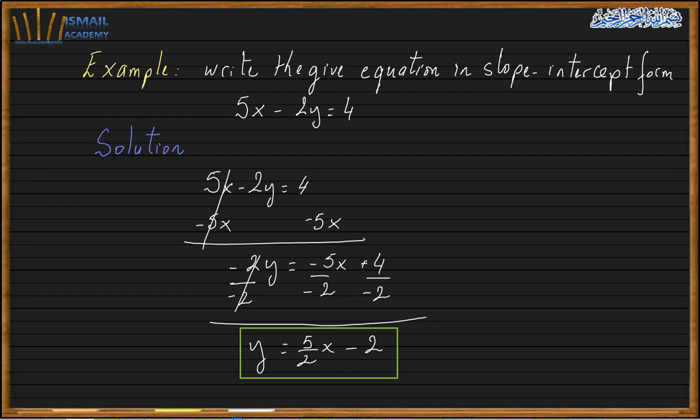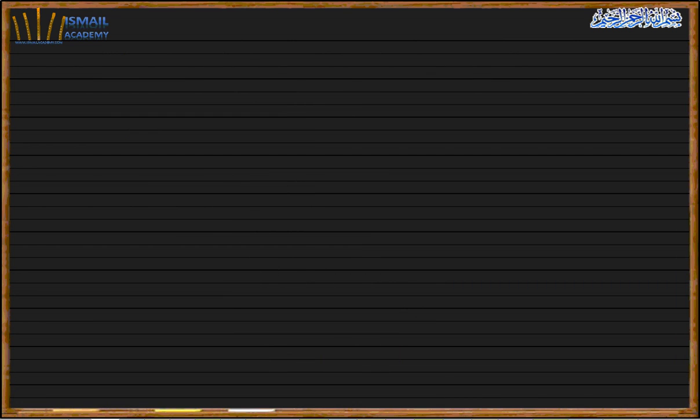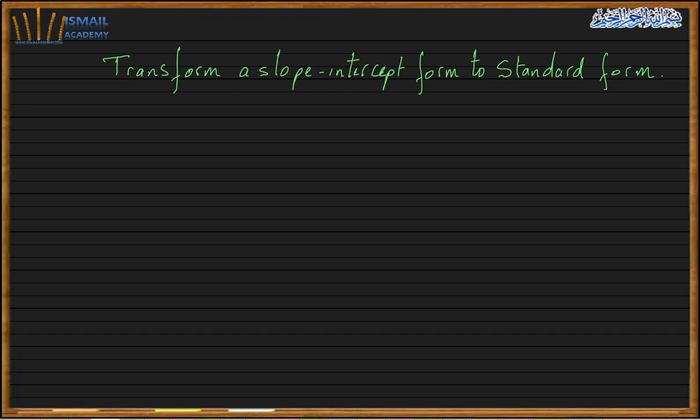So I hope it's clear. Now let's move to transform slope-intercept form to standard form. Given a slope-intercept form of a linear function.